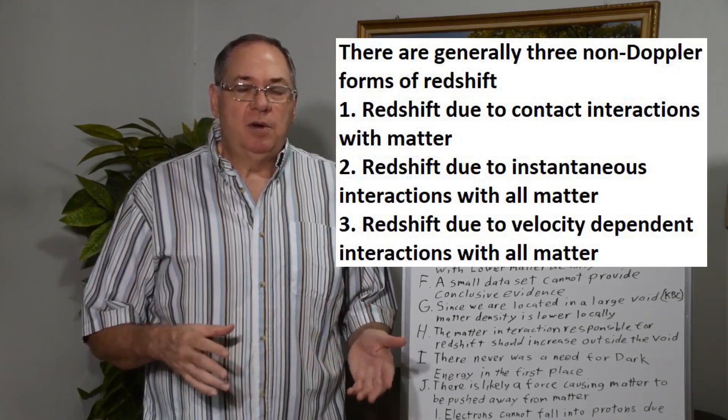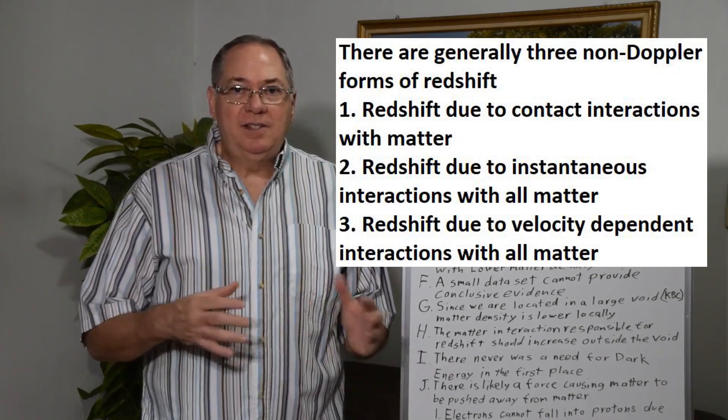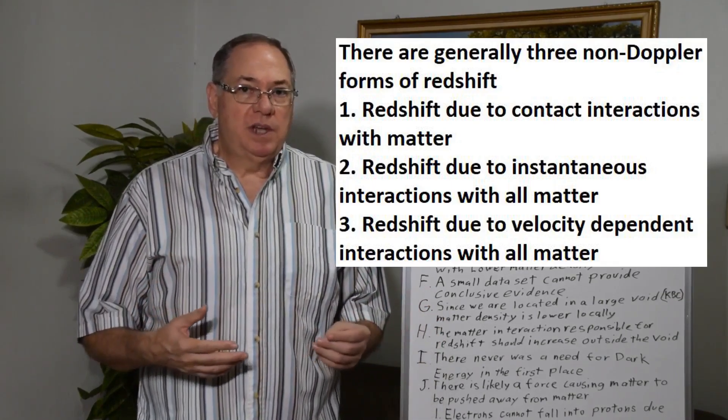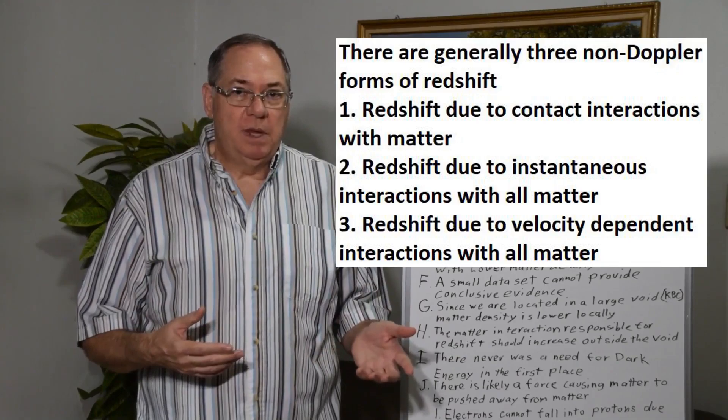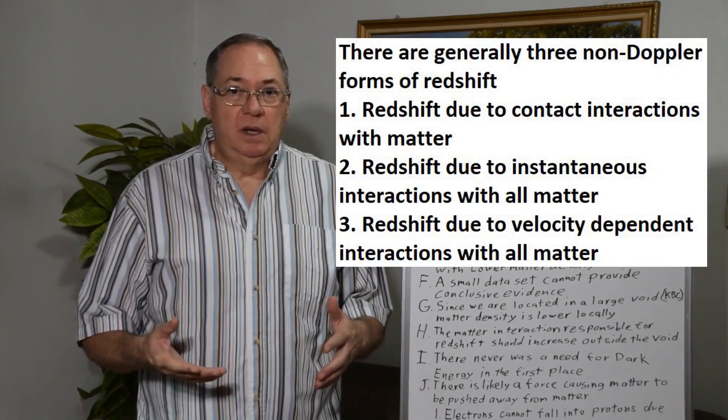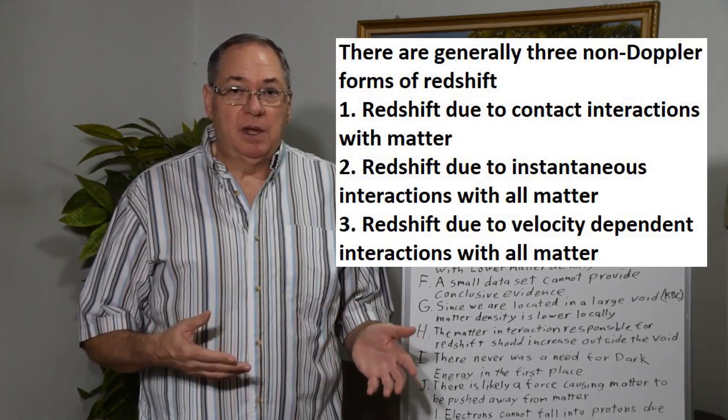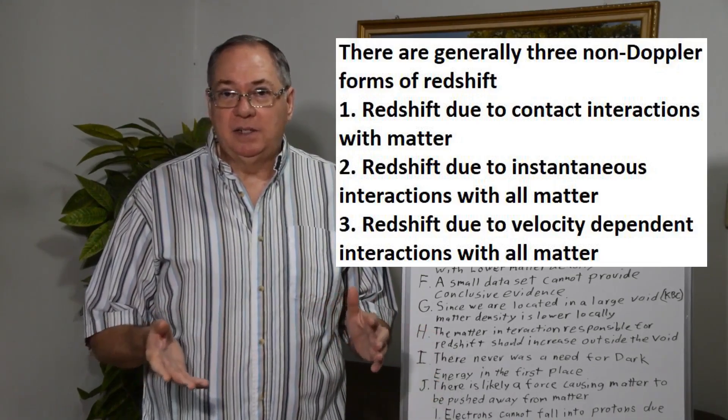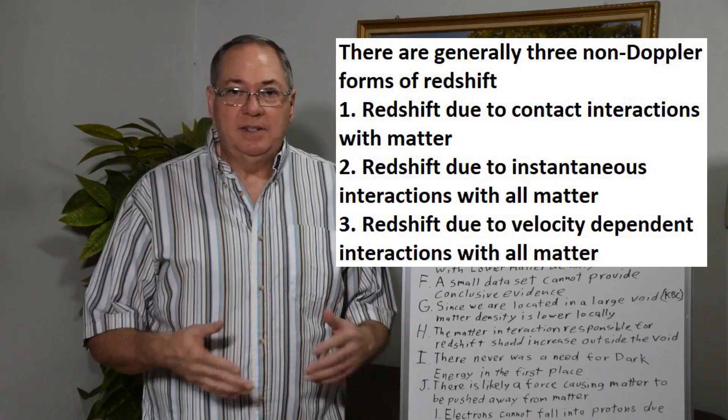So in an area of space with low density we'll have low redshift and with high density we'll have high redshift. Now another approach could be you have an instantaneous global interaction with all matter, in which case the redshift will be proportional to distance because it will always have the same basic interaction with matter and the same amount of redshift.